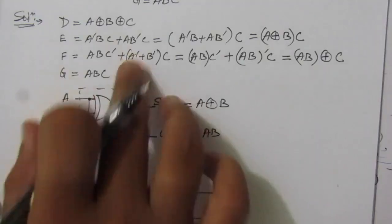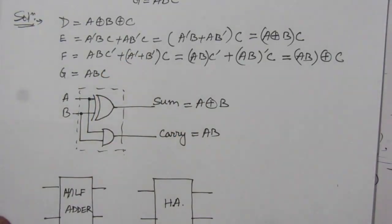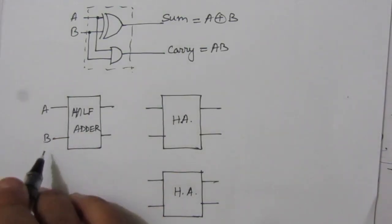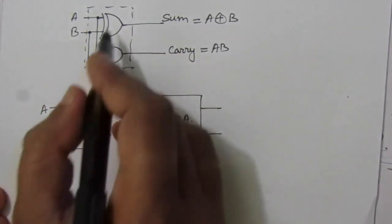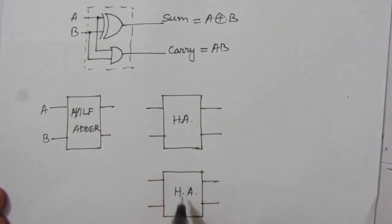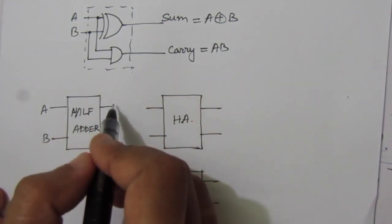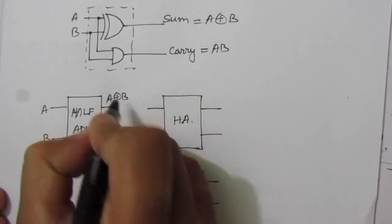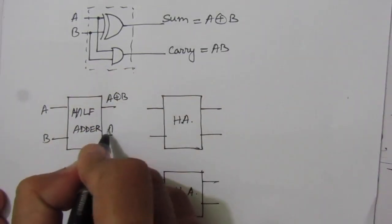We have to implement the given Boolean functions. The first function is A XOR B XOR C. If we give A and B as inputs to the first half adder, from its sum output we will get A XOR B, and from its carry output we will get A·B.